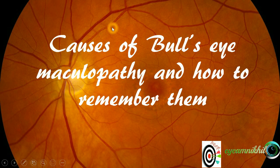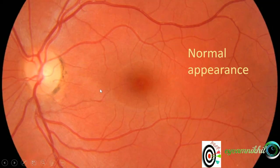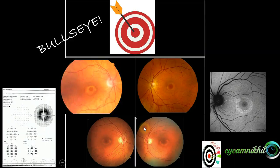Hello everyone, I am Nikhil and I am bringing to you a different video this time. It's a mnemonic on how to remember the causes of bullseye maculopathy. The macula is the central area of the retina measuring about 5.5 millimeters in diameter and is responsible for central sharp, high acuity vision. This is the normal appearance of the macula, and in some conditions the macula appears like a bullseye.